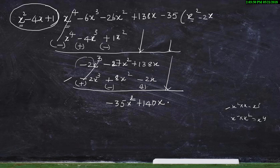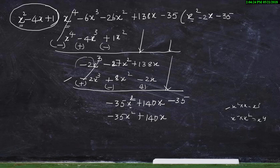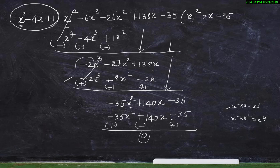Bring down -35. Now -35x² divided by x² gives -35, so multiply the divisor by -35: (-35)(x²) = -35x², (-35)(-4x) = +140x, (-35)(1) = -35. After subtraction: -35x² cancels, 140x - 140x cancels, -35 + 35 cancels. The remainder is 0.